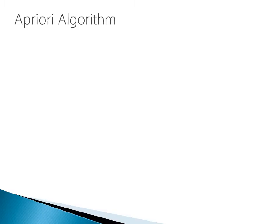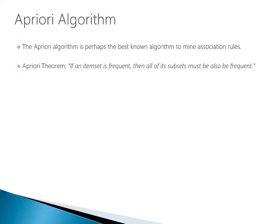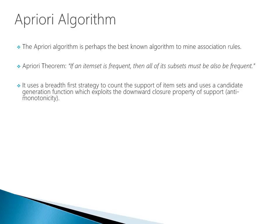Now that we've talked about the metrics for evaluating association rules, let's dive into an algorithm — most notably the a priori algorithm. This algorithm is perhaps the best-known algorithm for mining association rules. The a priori theorem states: if an item set is frequent, then all of its subsets must also be frequent.